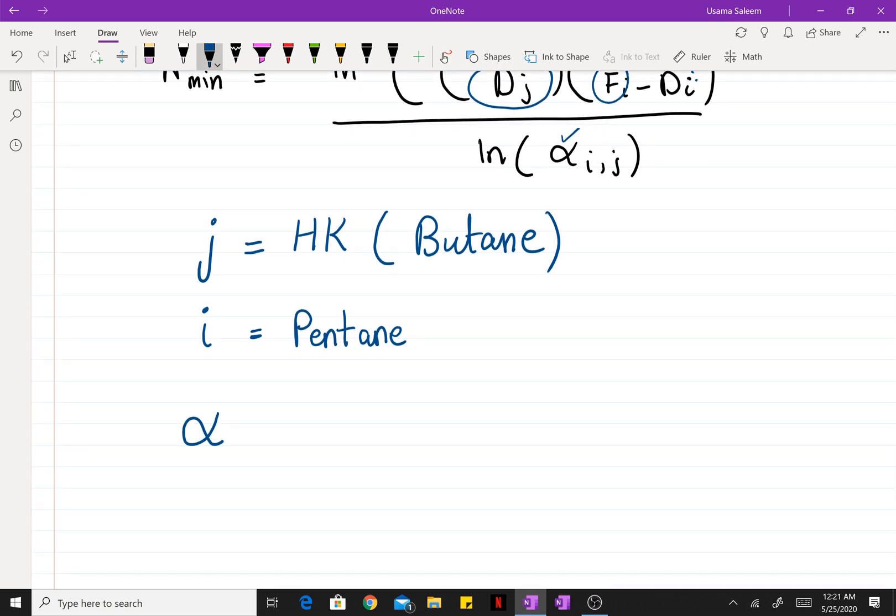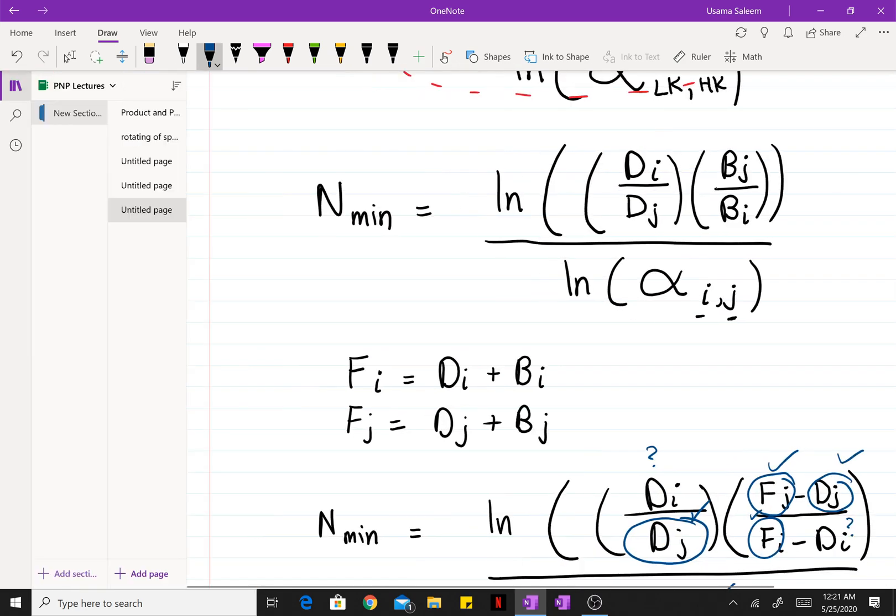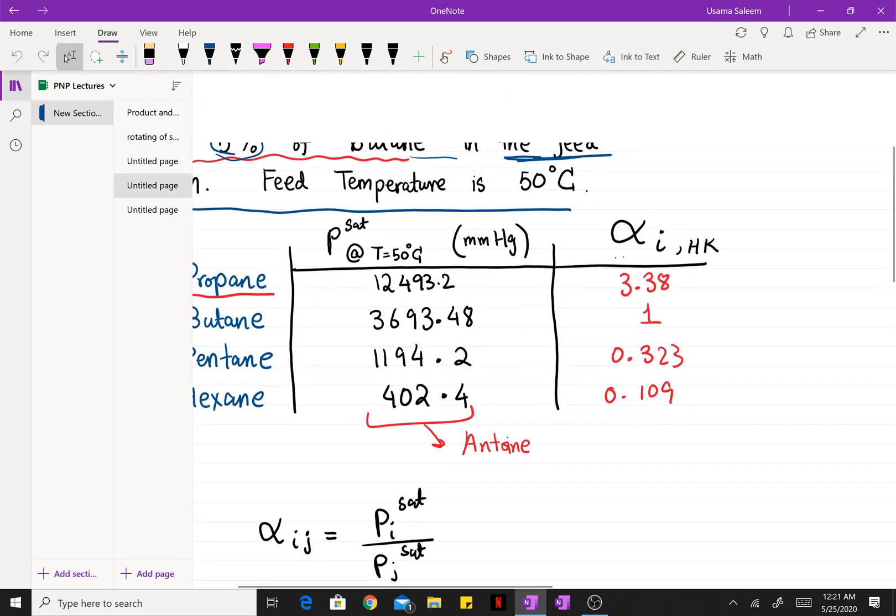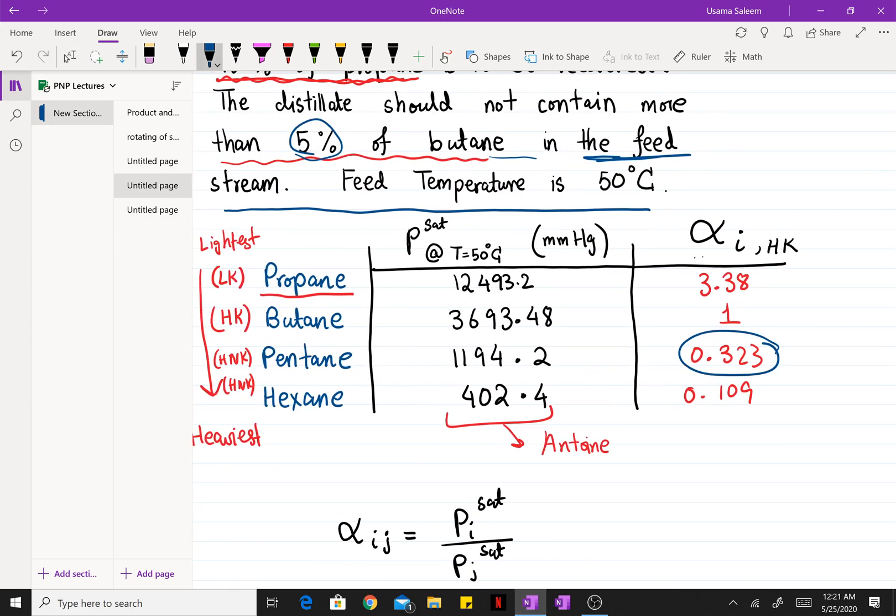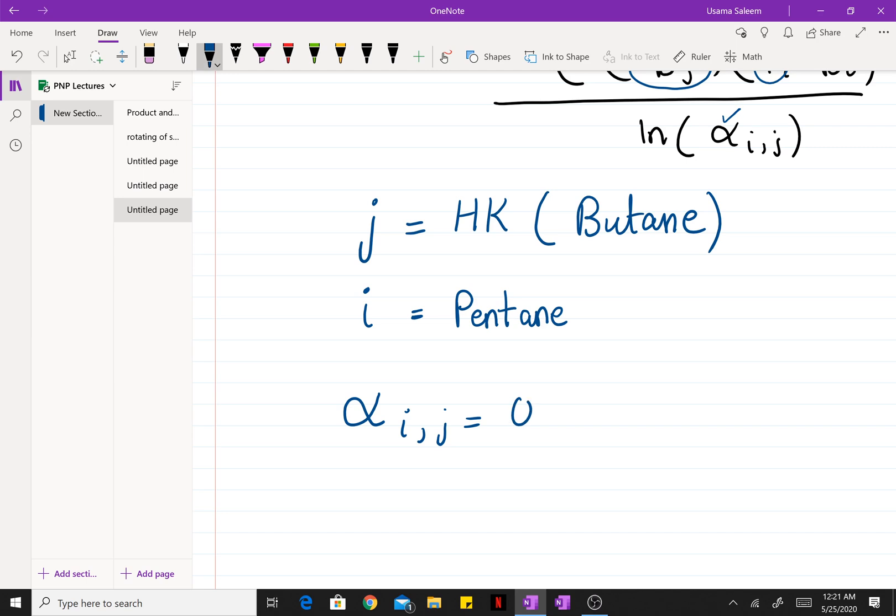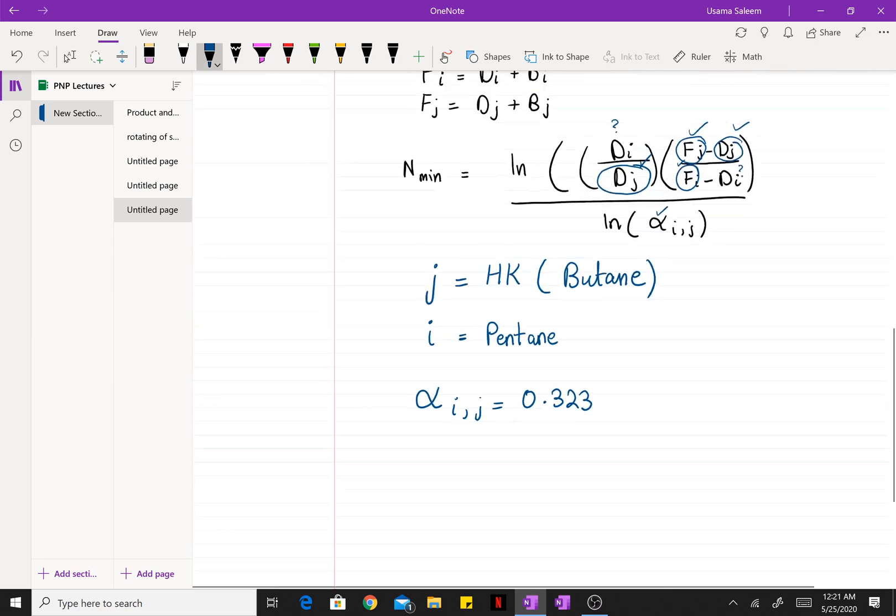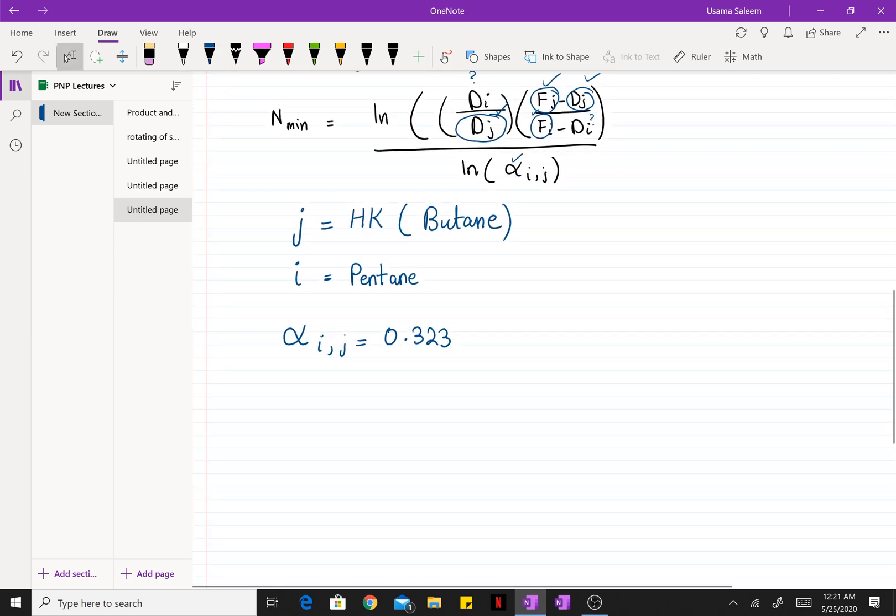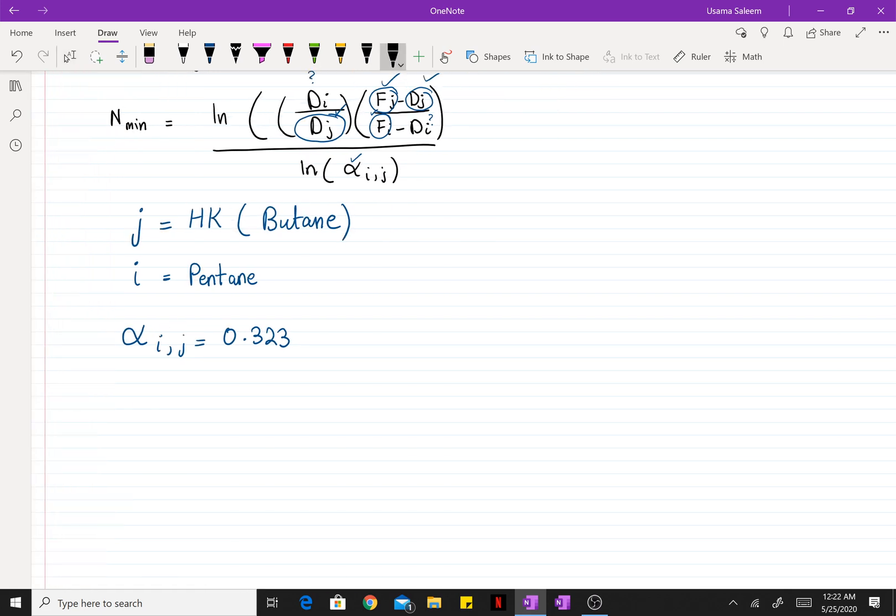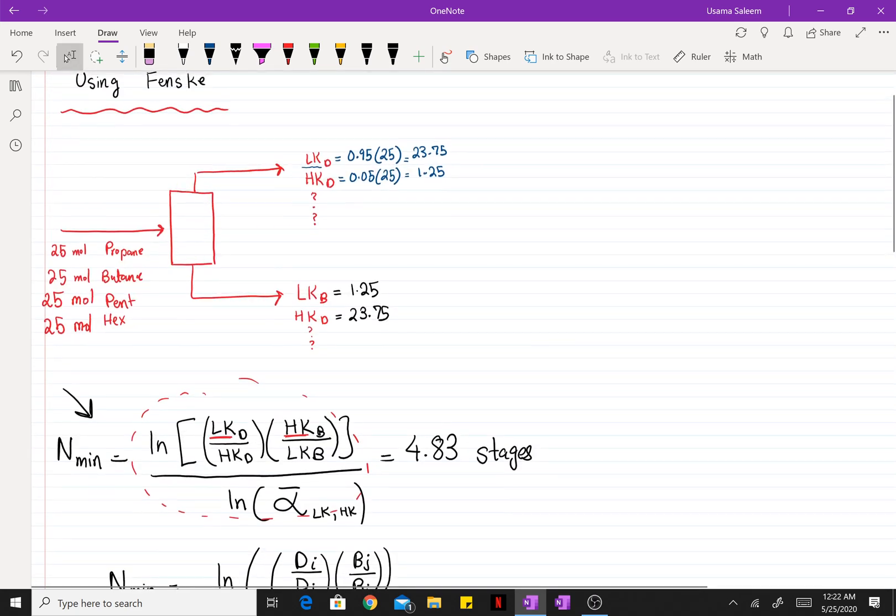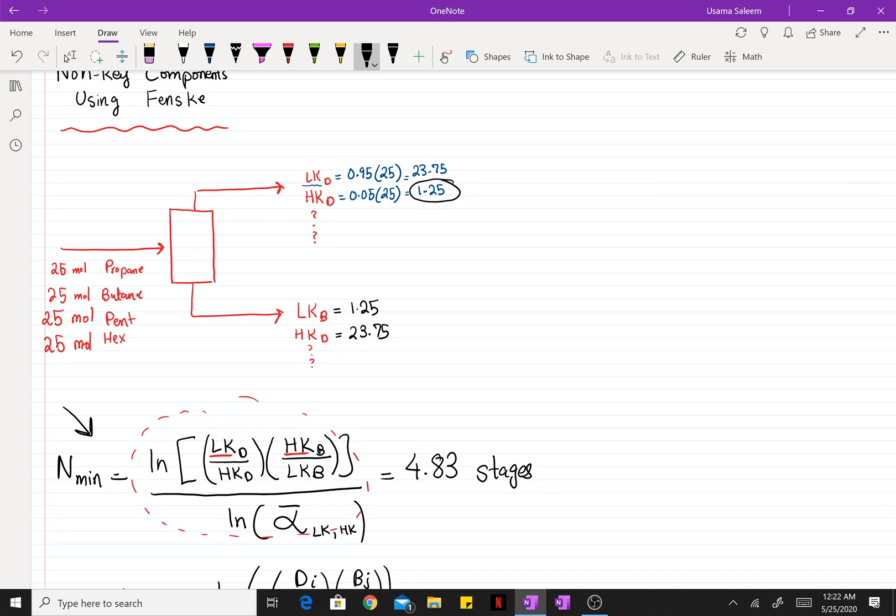So for our case, alpha IJ, the relative volatility of pentane with respect to butane, we calculated that earlier in the previous video. I have it right here, 0.323, so I'm gonna use that. Our minimum number of stages is 4.83.